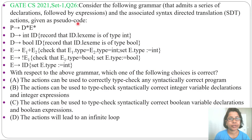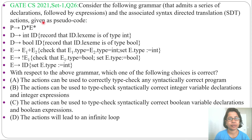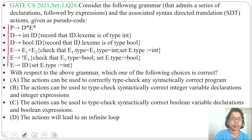Let's look at a previous question on SDT from compilers. This question was asked in GATE CS 2021, Set 1, Question 26. Consider the following grammar that admits a series of declarations followed by expressions and the associated syntax directed translation (SDT) actions given as code. For solving this question you should have knowledge about SDT — how SDT works. Let me first analyze this grammar with semantic actions and then check the options.